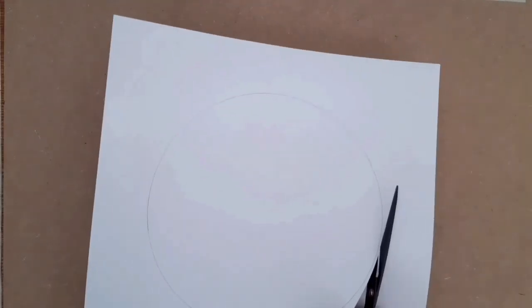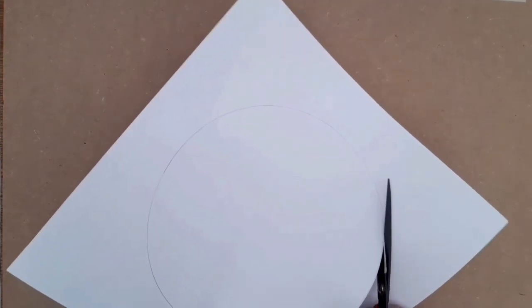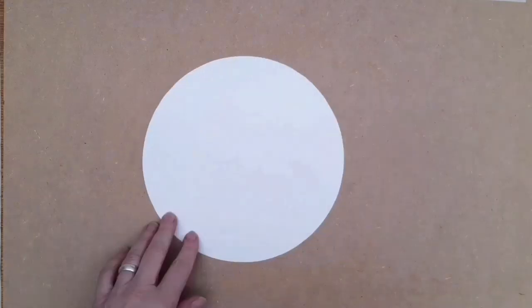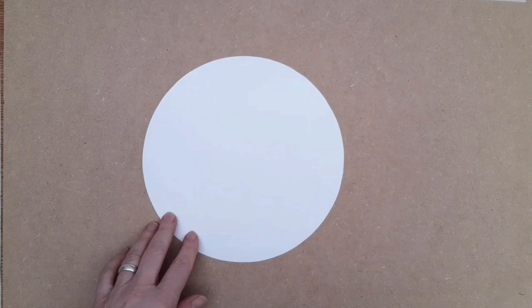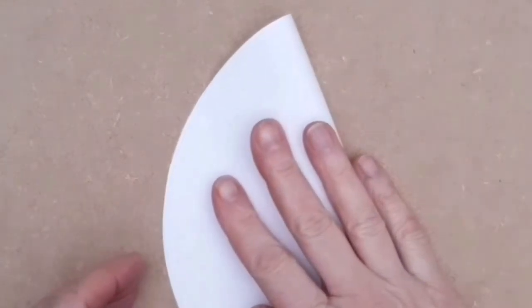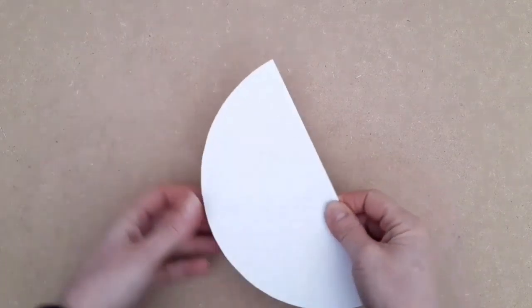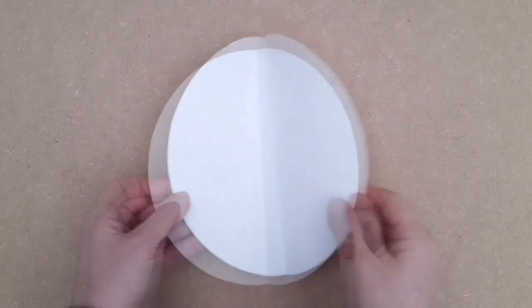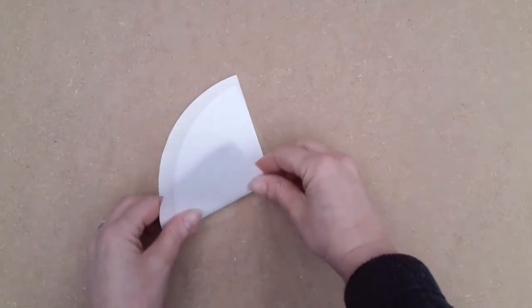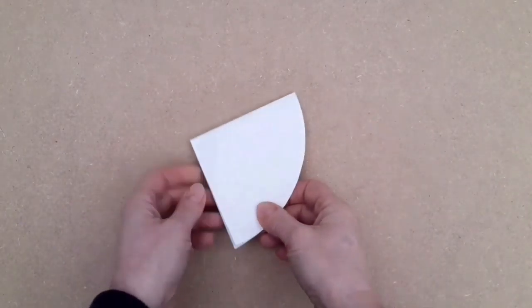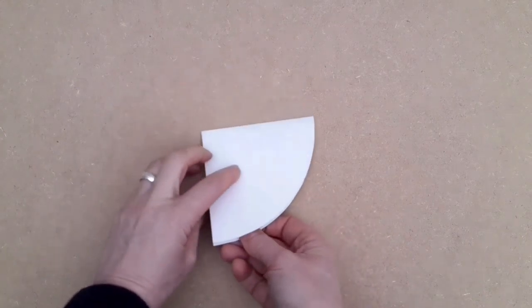And now I'm going to make a template with one circle. So I'm going to fold the circle in half, give it a good crease down the center, then in half again, so it's in quarters. And fold one more time into the center.